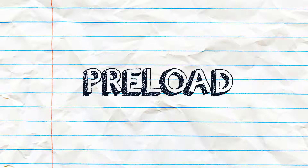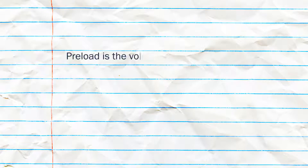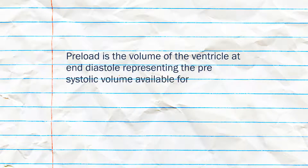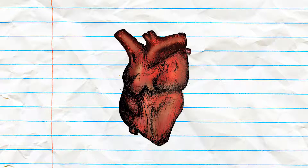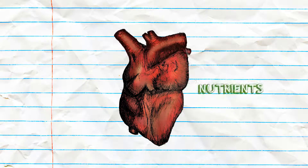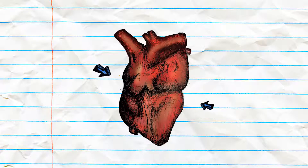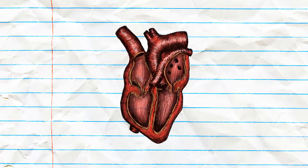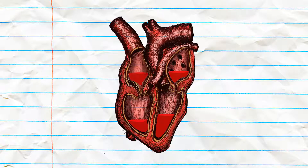Preload, put simply, is referred to as filling pressures. More precisely, preload is the volume in the ventricle at end diastole, representing the presystolic volume available for ejection for the cardiac cycle. The heart delivers oxygen and vital nutrients to tissues and organs — arteries deliver blood to the organs, and veins return blood back to the heart. Simply put, preload is the amount of blood that fills the heart before contracting.